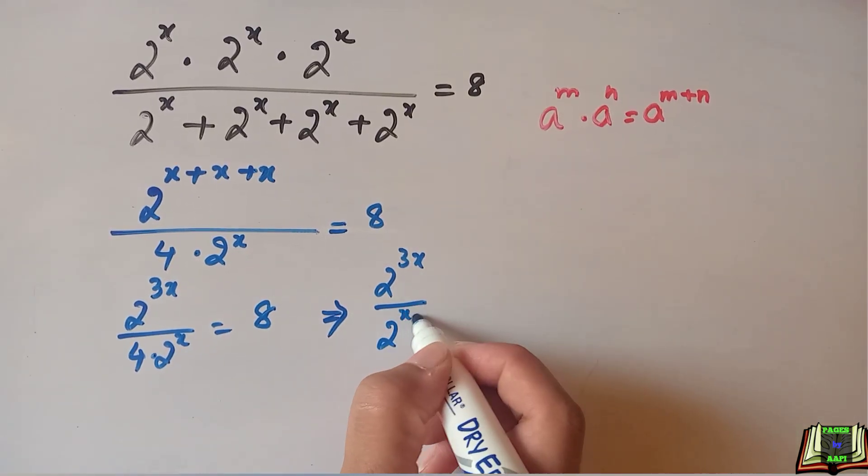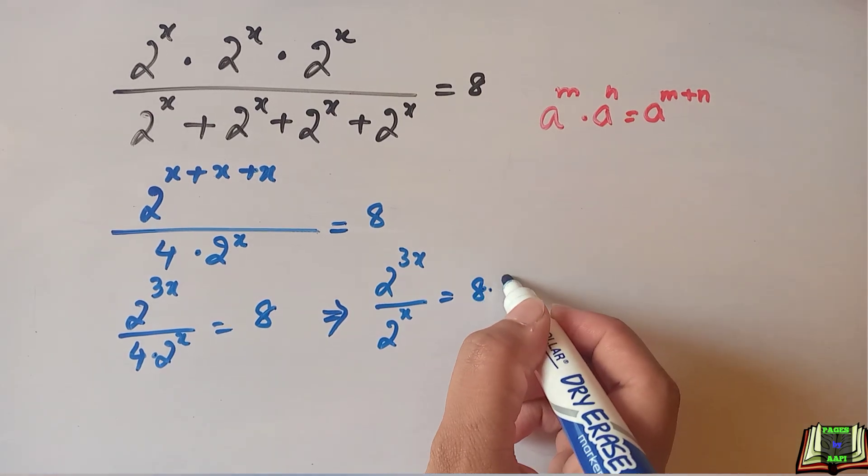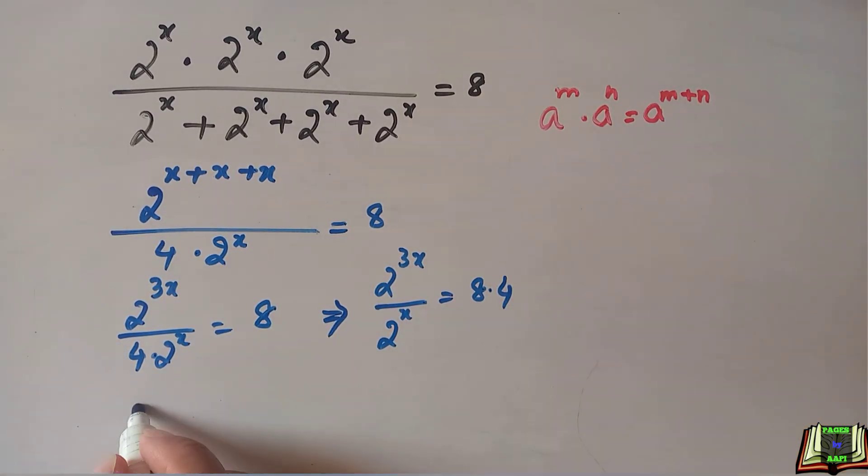8 times 4, that is equal to: 2 to the power 3x divided by 2 to the power x is equal to 32. Now we can see the bases are same.